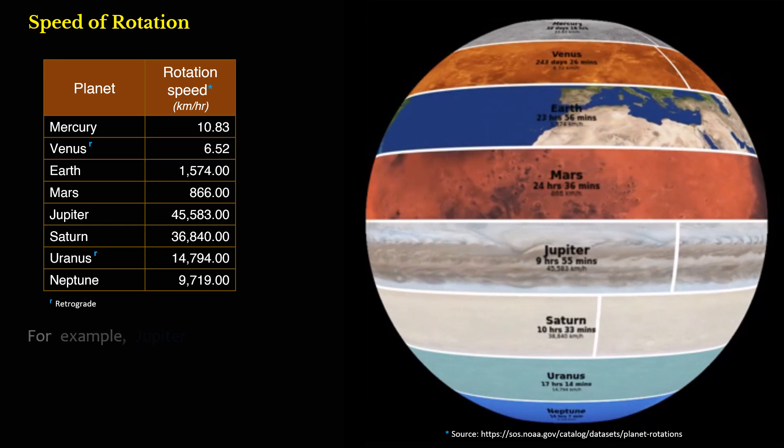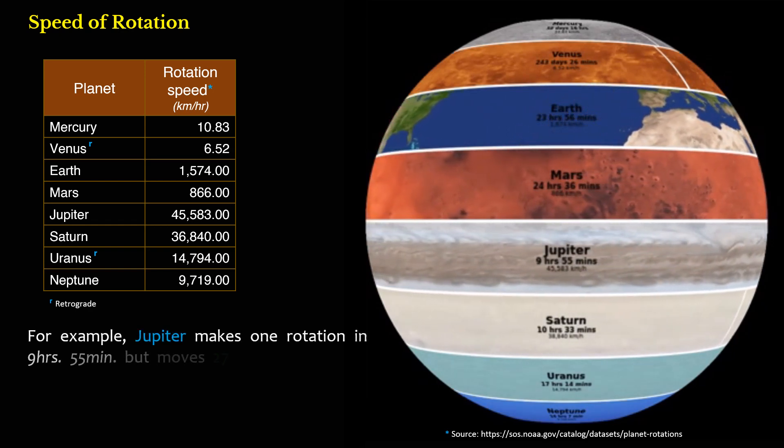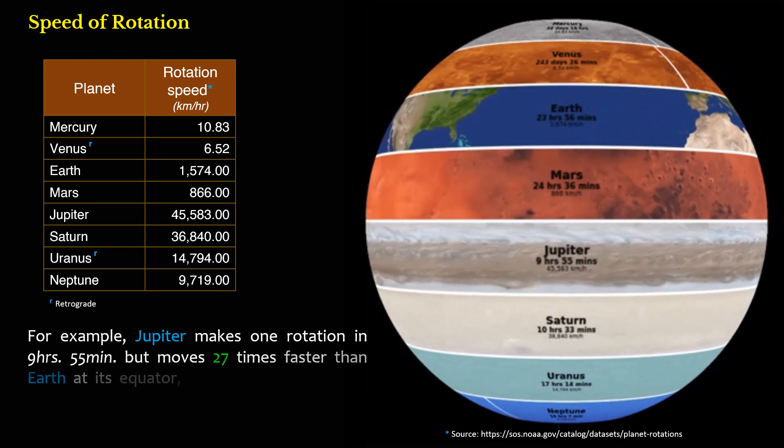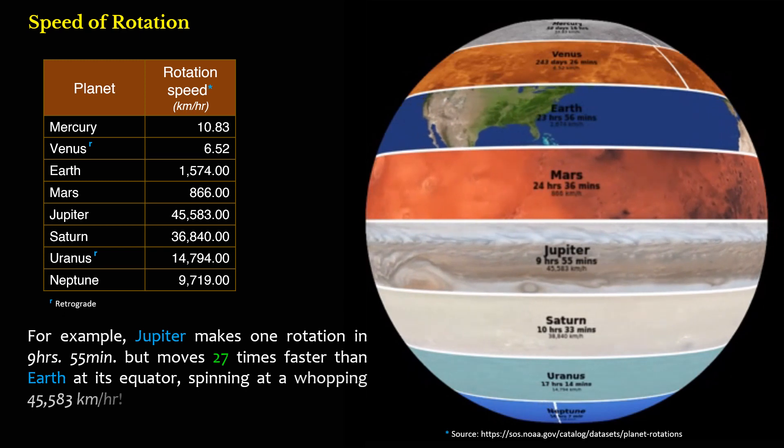For example, Jupiter makes one rotation in 9 hours, 55 minutes, but moves 27 times faster than Earth at its equator, spinning at a whopping 45,583 kilometers per hour.